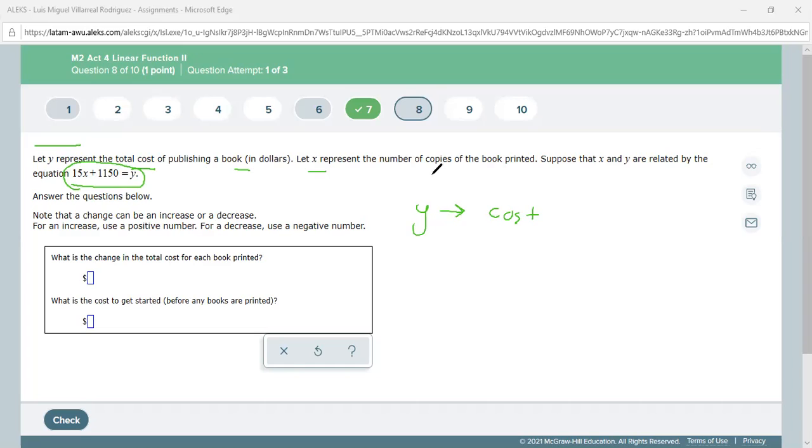Let x represent the number of copies. I print more, there is a higher cost. Suppose that x and y are related by the equation they give us here: 15x plus 1150 equals y. Answer the following questions.